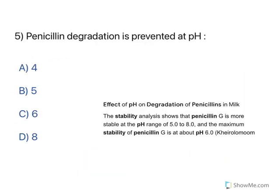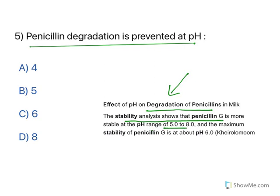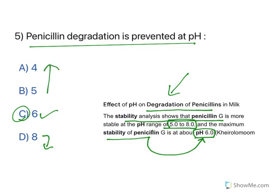Moving on: penicillin degradation is prevented at what pH? There is a study on the effect of pH on degradation of penicillin. Stability analysis shows penicillin G is most stable in the pH range of 5 to 8, but maximum stability of penicillin is at pH 6. At pH 8 and above the molecule breaks down; in very acidic conditions it breaks the beta-lactam ring. The answer is C, pH 6.